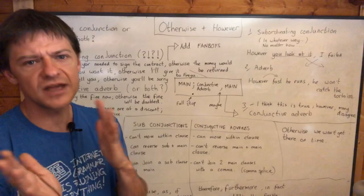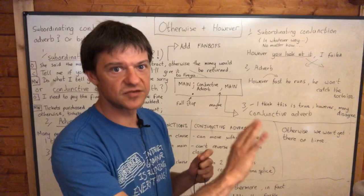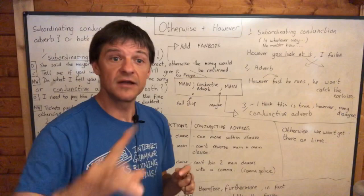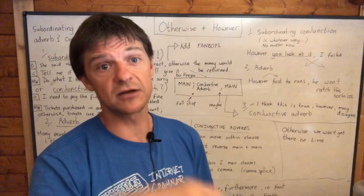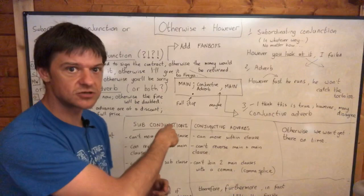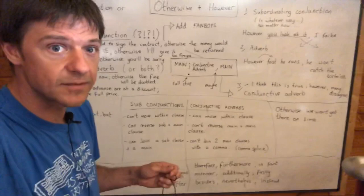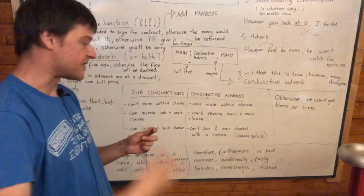In the last lesson we looked at the difference between FANBOYS coordinating conjunctions and subordinating conjunctions, and we learned that subordinating conjunctions, when they start subordinate clauses, allow you to always swap the clauses around. You can start with a subordinate clause then have the main clause, or start with the main clause and then have the subordinate clause. That's something subordinating conjunctions can do. Conjunctive adverbs are words like therefore, furthermore, in fact, moreover.